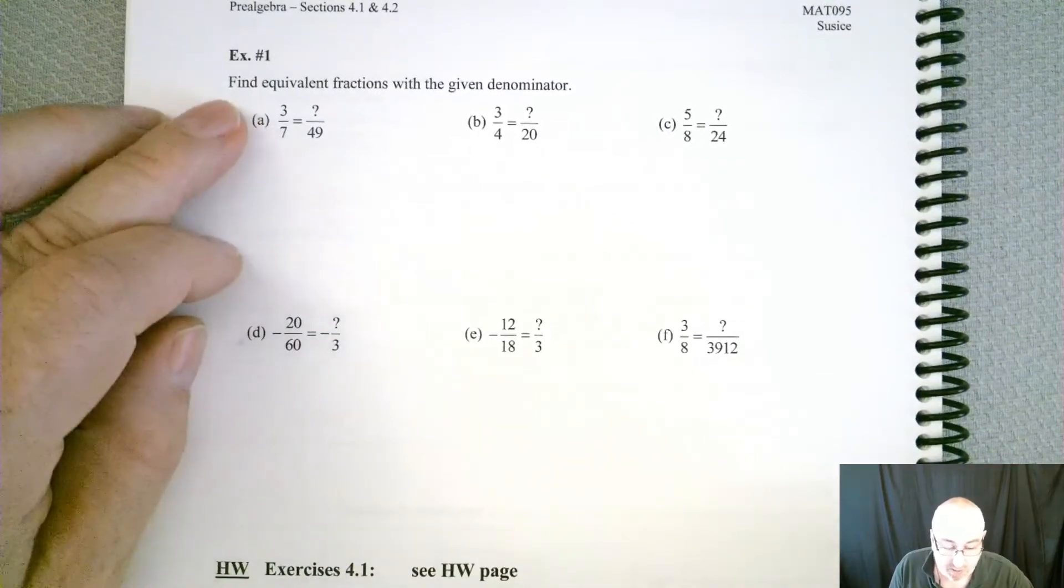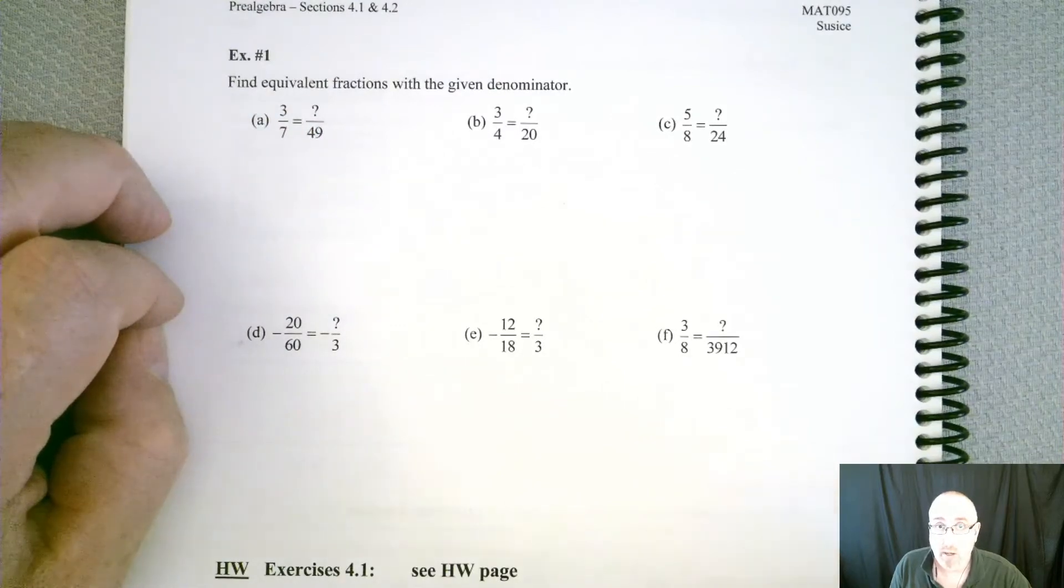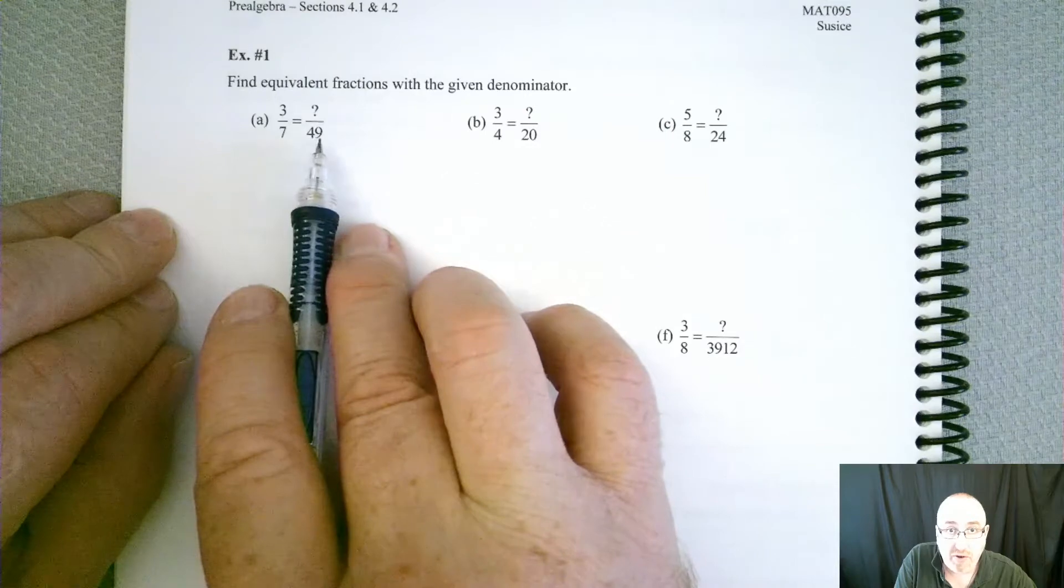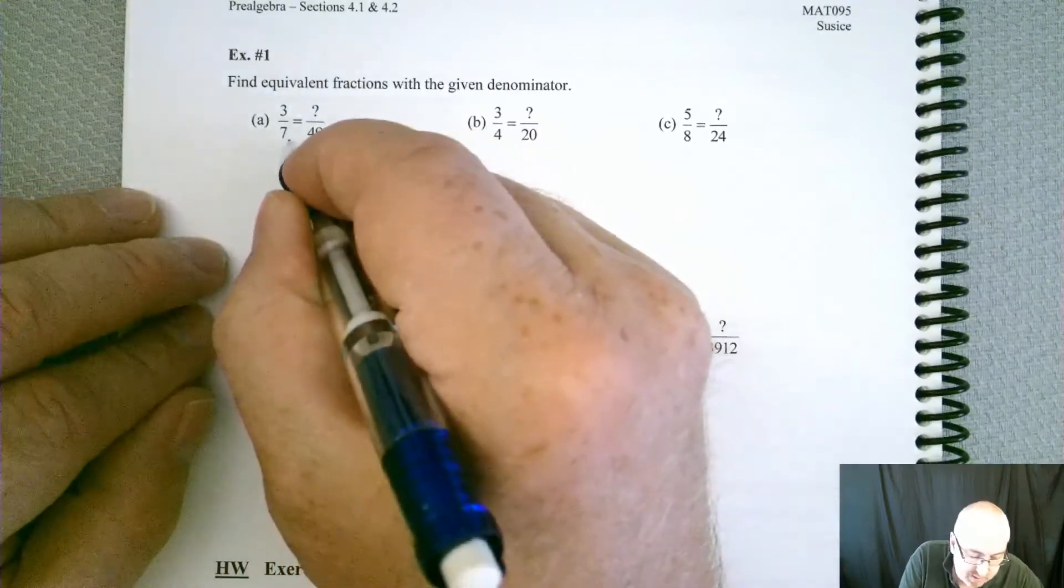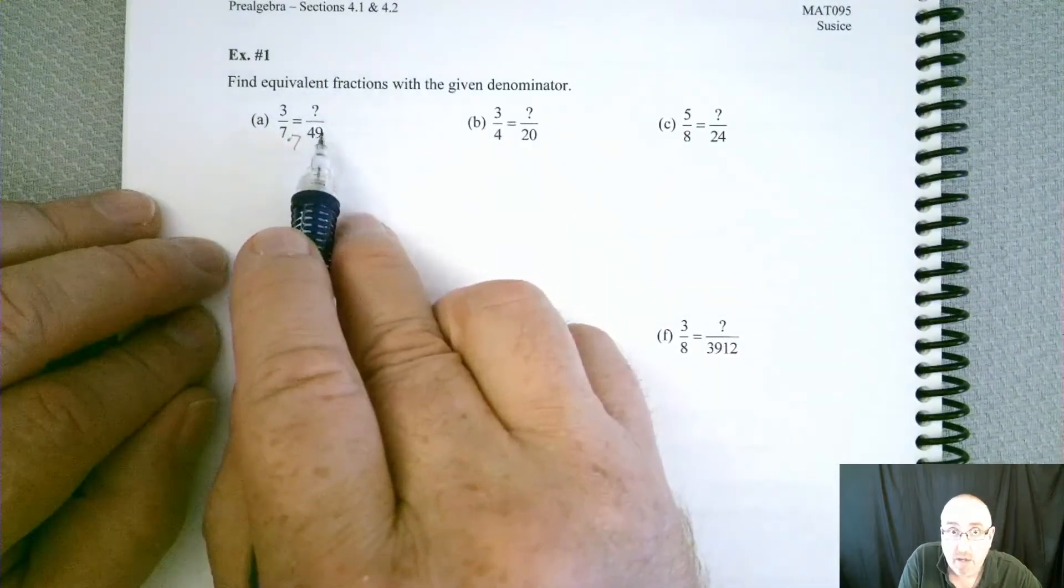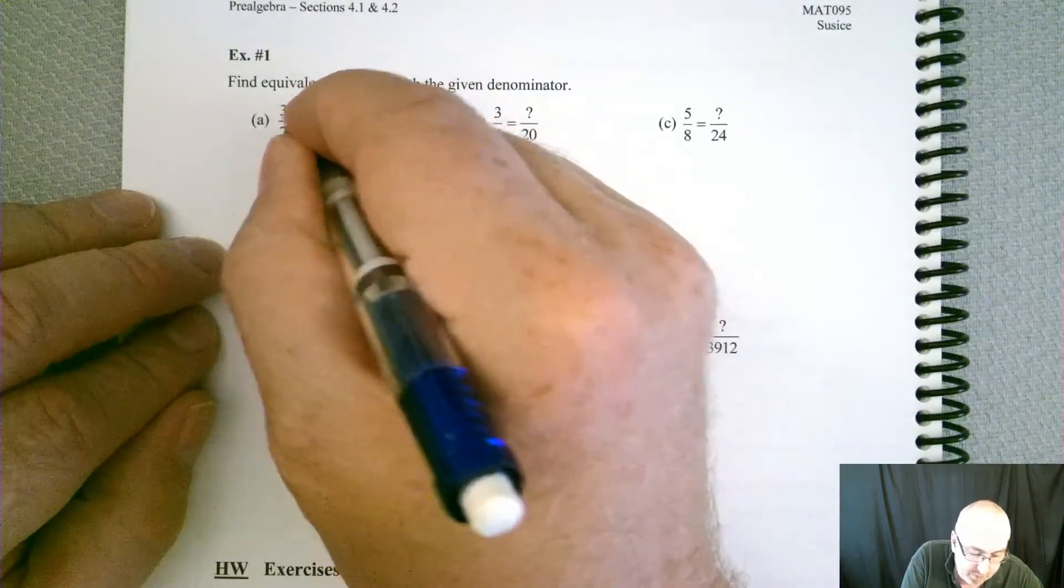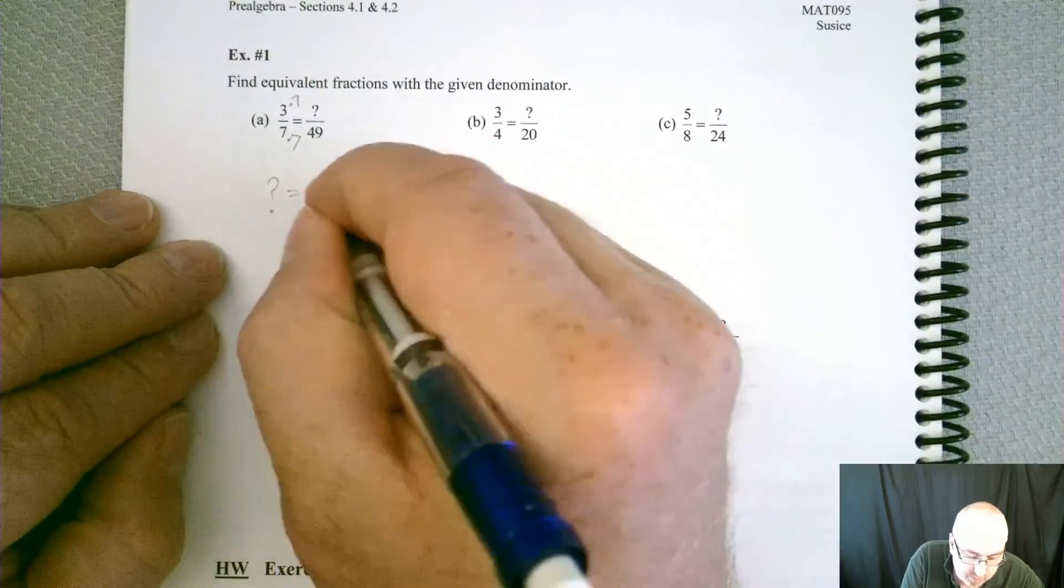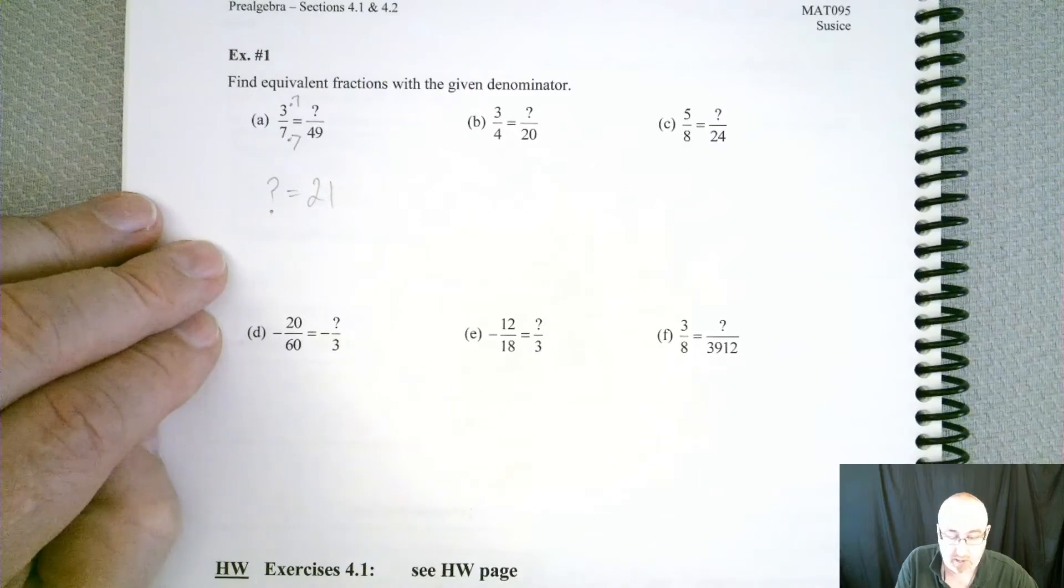So we have find equivalent fractions with the given denominator. We basically want to know what the question mark has to be to make this work. Let's take a look at the first one. We started with a 7, and then they changed it to a 49. The question you have to ask yourself is, what did I multiply by? And the answer is 7. If I multiply 7 times 7, I get 49. Based on from before, I have to do the same thing to the top. So I have to multiply the top by 7. So that forces my question mark to be equal to 21.